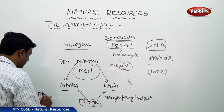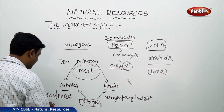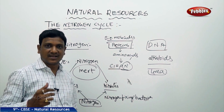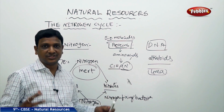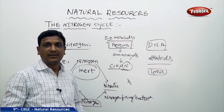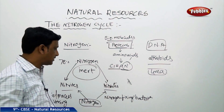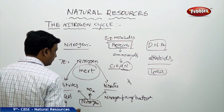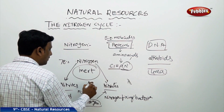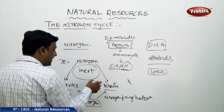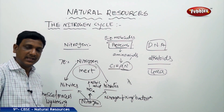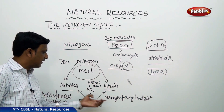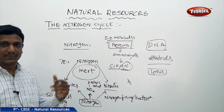Apart from nitrogen-fixing bacteria, a physical process called lightning also helps. When there is a storm, a big light comes in the sky. Because of electric discharge, this creates high pressure and temperature at that particular place. At this point, the nitrogen in the atmosphere turns to oxides of nitrogen, and these oxides of nitrogen become nitric acid. This nitric acid mixes with rain water and falls down into the soil, where it is used by organisms. So lightning helps in fixing the atmospheric nitrogen, as do nitrogen-fixing bacteria.